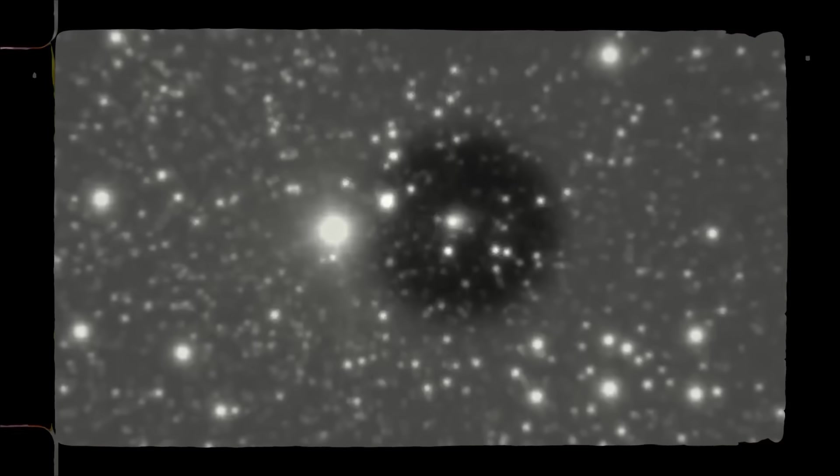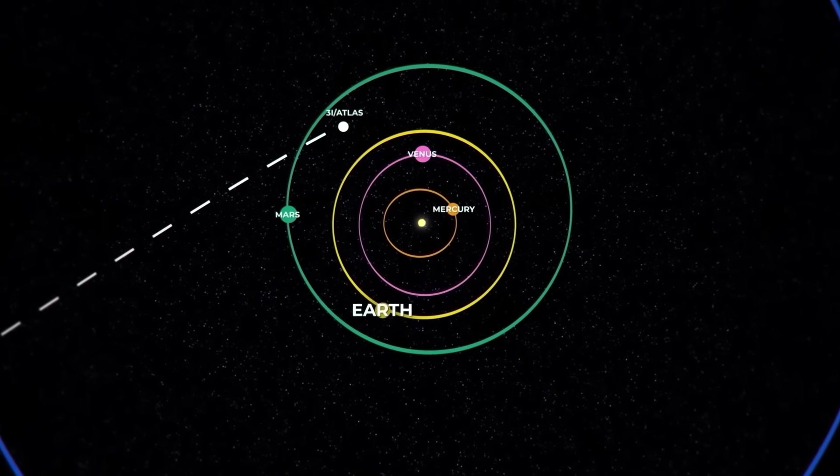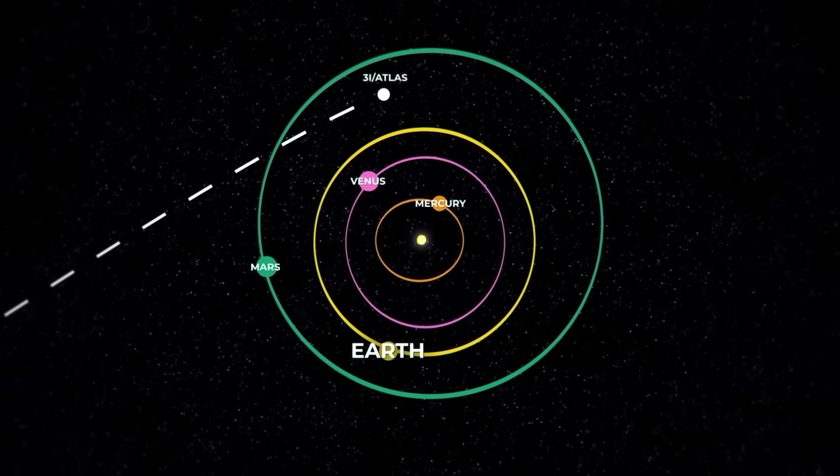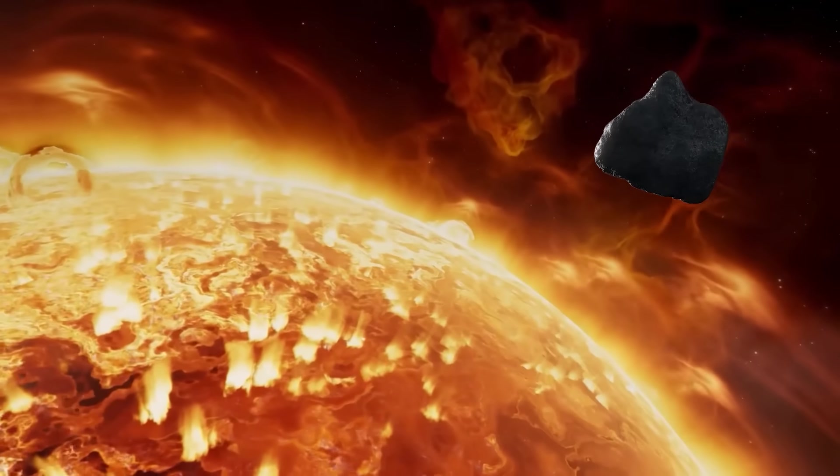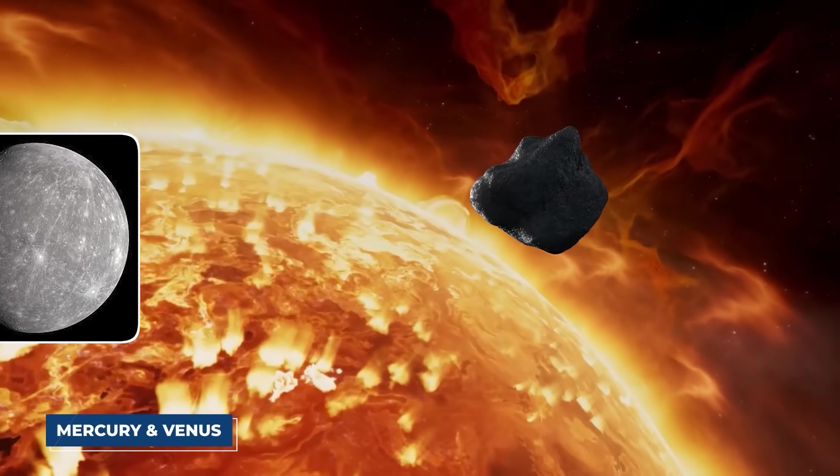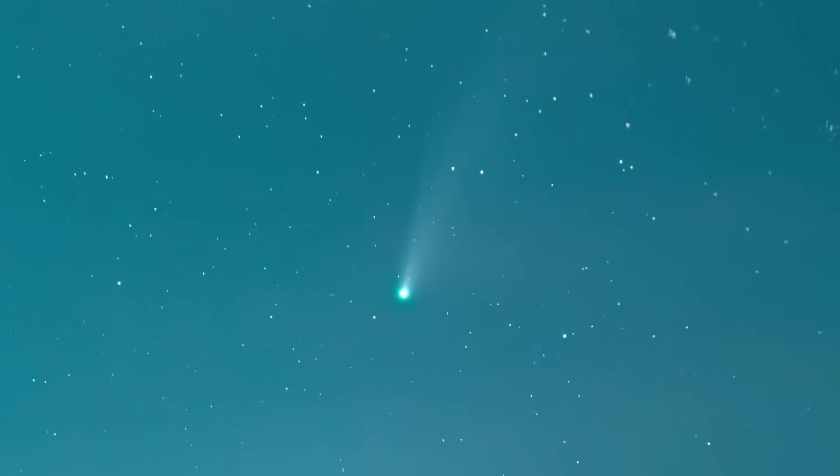This wasn't just any comet. Its trajectory was unusual, its composition a mystery. As it plunged closer to the Sun, past the orbits of Mercury and Venus, something extraordinary occurred.